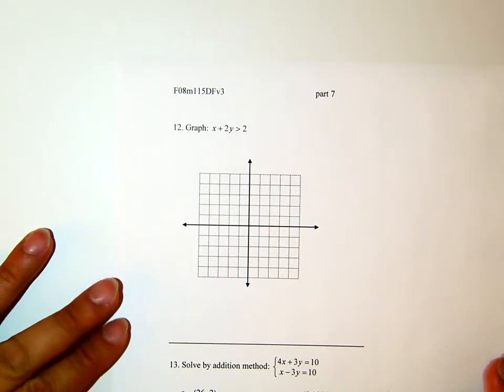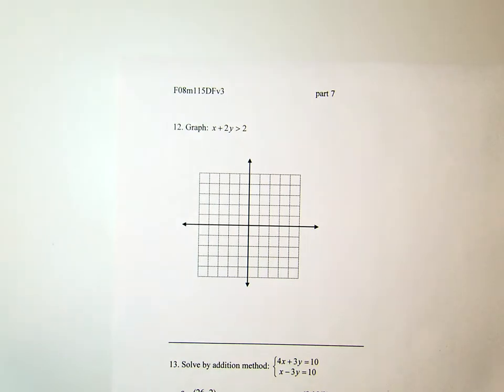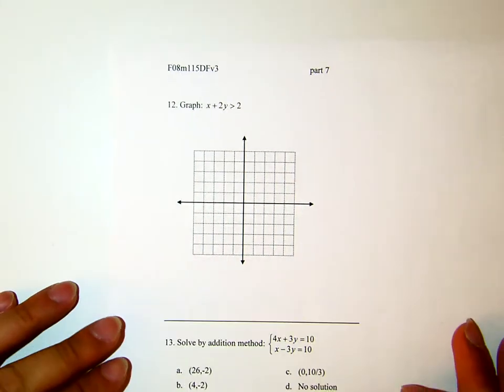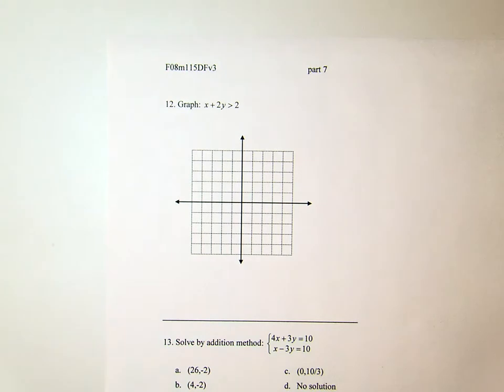Number 12: graph x + 2y > 2. This question is supposed to have four graphs as your options to choose from. I have a hard time to graph that, so instead I will treat this like a free response question. What we will do is graph this inequality.